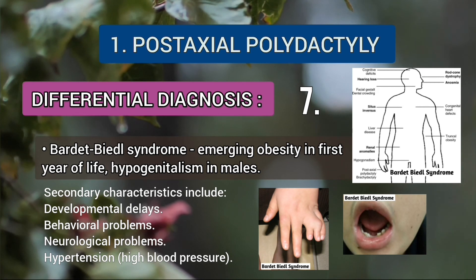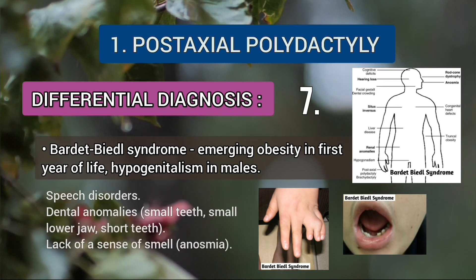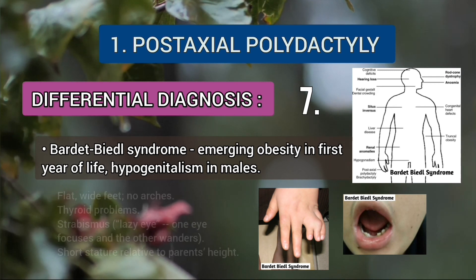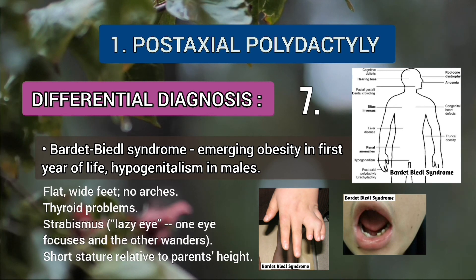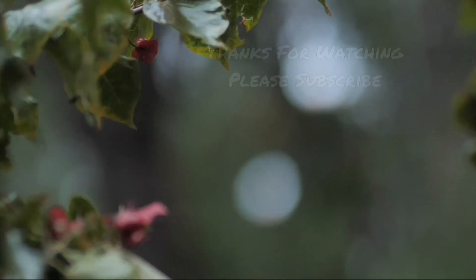Secondary characteristics include developmental delays, behavior problems, neurological problems, and hypertension. There may also be speech disorders, dental anomalies, lack of sense of smell, flat feet with no arches, thyroid problems, strabismus, or short stature.